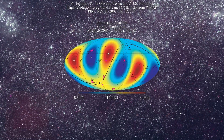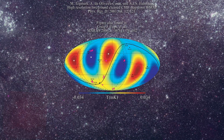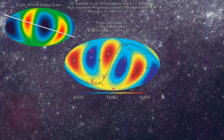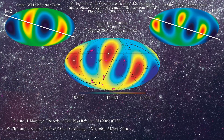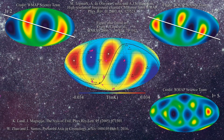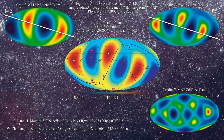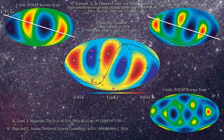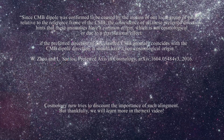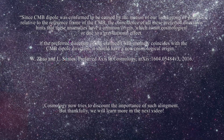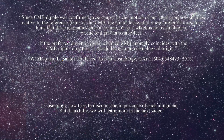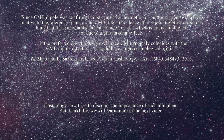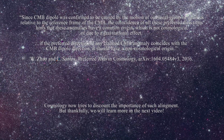A lot of time has been spent debating the axis of evil and whether or not it represented anything real. The problem extended beyond the quadrupole and octupole, as the alignment was essentially preserved in lower order multiples, including L equal 5. Here are the L equal 3 and L equal 5 terms — again, alignment is seen. In the end, it was shown that the extent of galactic masking could greatly alter the result, rendering it at times scientifically insignificant, so data processing could have been responsible for much of the effect. The presence of a preferred axis has been described as follows: since the CMB dipole was confirmed to be caused by the motion of our local group of galaxies relative to the reference frame of the CMB, the coincidence of all these preferred directions hints that these anomalies have a common origin which is not cosmological or due to gravitational effects. If the preferred direction of any claimed CMB anomaly coincides with the CMB dipole direction, it should have a non-cosmological origin.